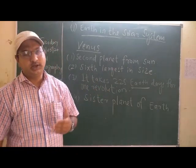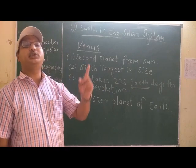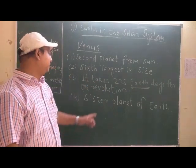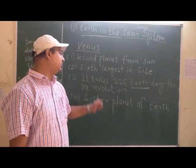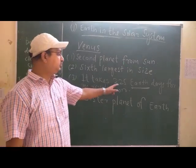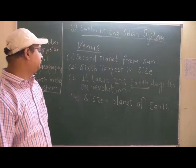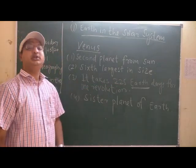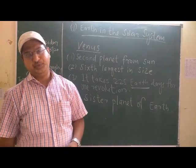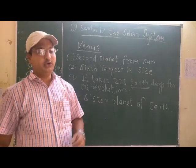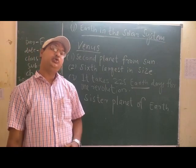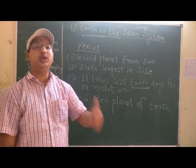Revolution means to revolve around the sun in an orbit, in a fixed path — that is called revolution. Our Earth takes 365 days for one revolution, and Venus takes 225 days. One more thing: Venus revolves on its own axis very, very slowly — it takes 243 days to rotate on its own axis.